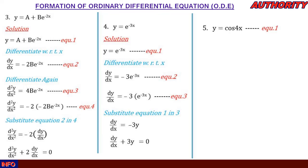For number five, y = cos(4x). Call this equation 1. Differentiating for the first time using the chain rule, dy/dx = −4·sin(4x). Call this equation 2.